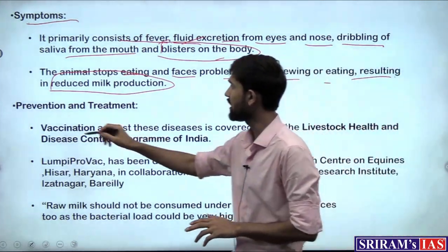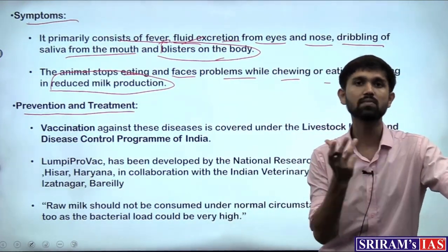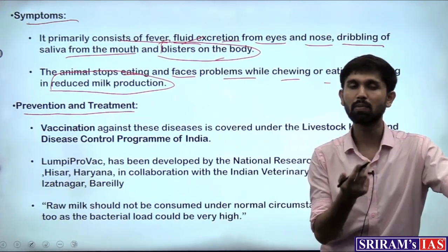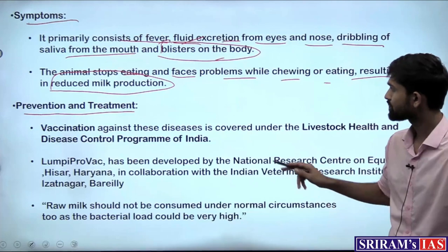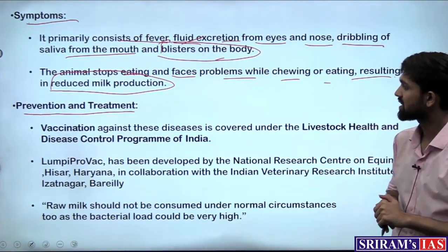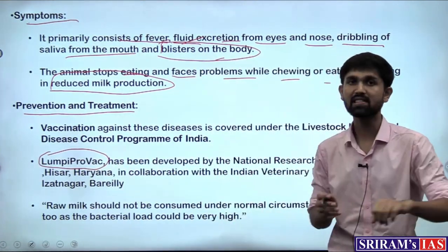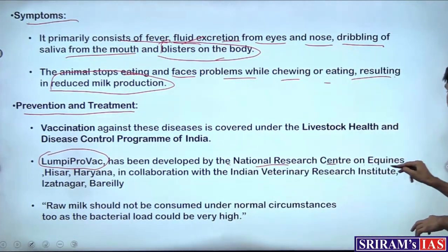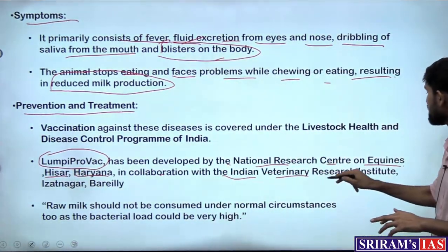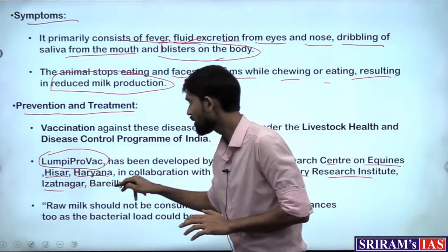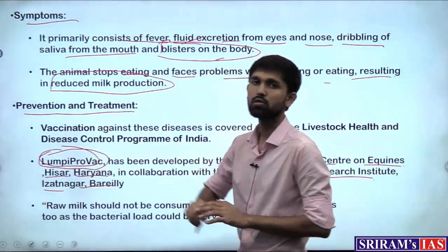Regarding prevention and treatment: earlier, only normal treatment mechanisms were available — anti-inflammatory medicines for blisters and fever-reducing medicines for fever. But now a vaccine has come in, known as Lumpy ProVac. The Lumpy ProVac vaccine has been indigenously developed by the National Research Centre on Equines, located in Hisar, Haryana, in collaboration with the Indian Veterinary Research Institute located in Izzat Nagar, Bareilly. These two institutes together developed the indigenous vaccine — also an important fact to know.